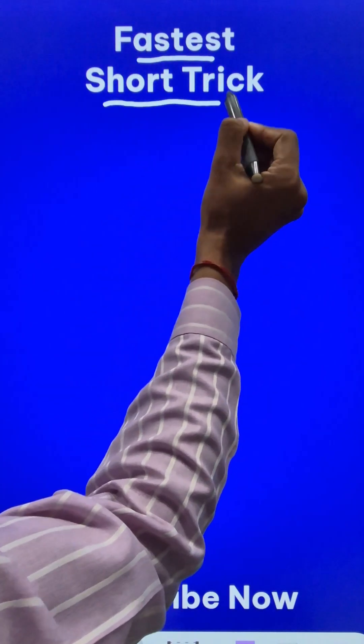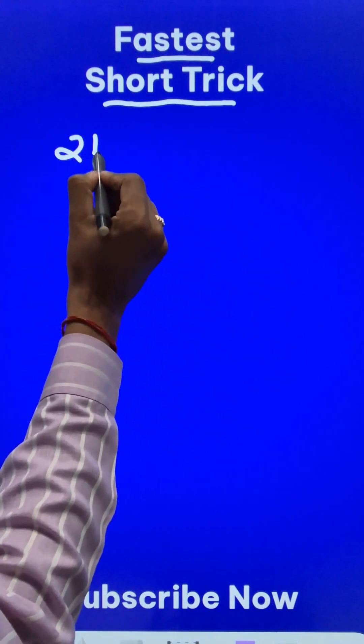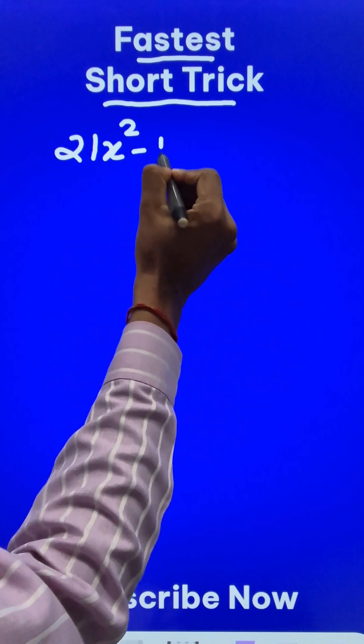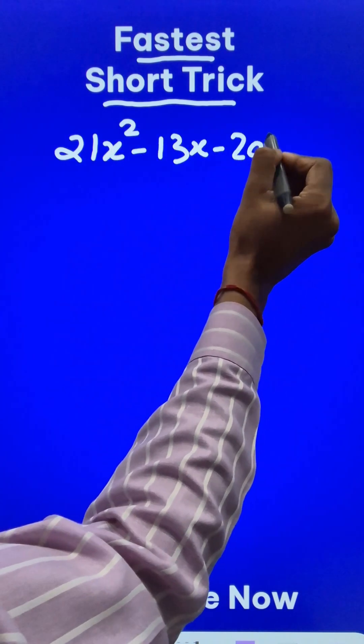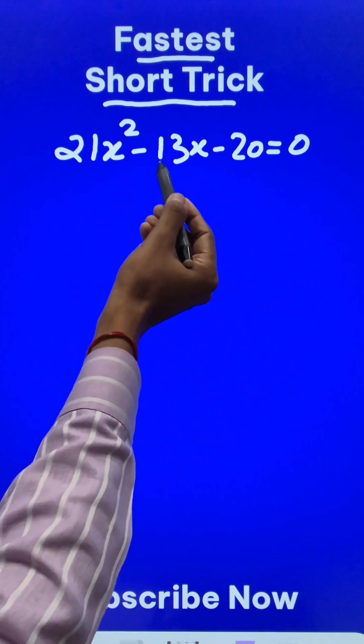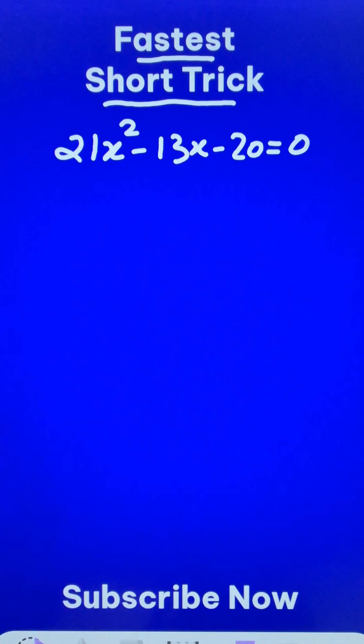Here is the shortest short trick for solving this quadratic equation 21x² - 13x - 20 = 0. Most students will get stuck on how to split the middle term, so let me simplify it for you.